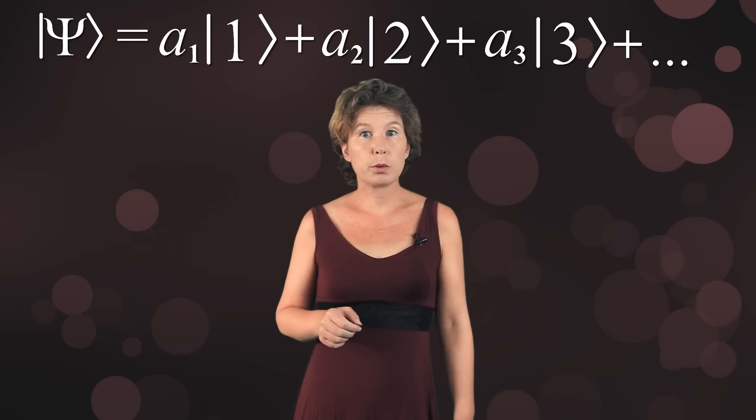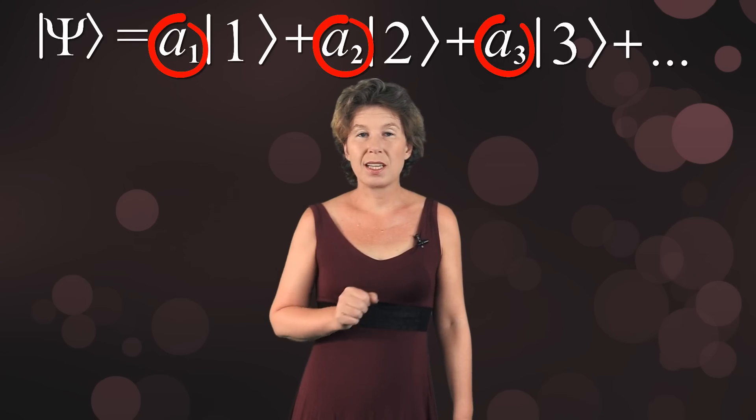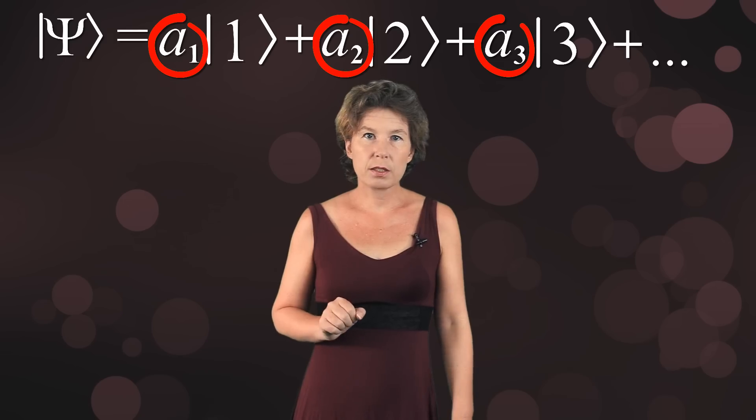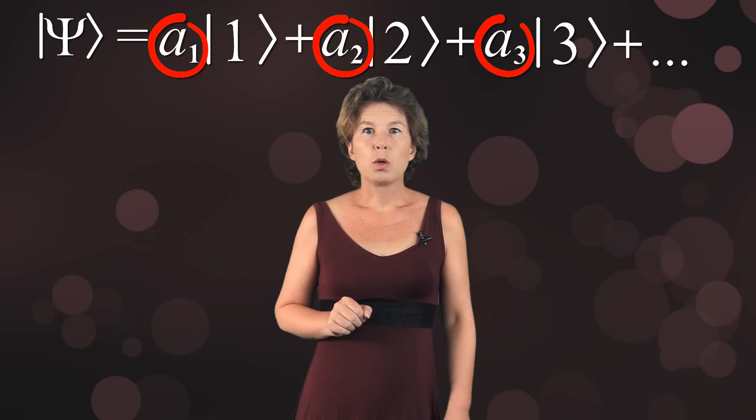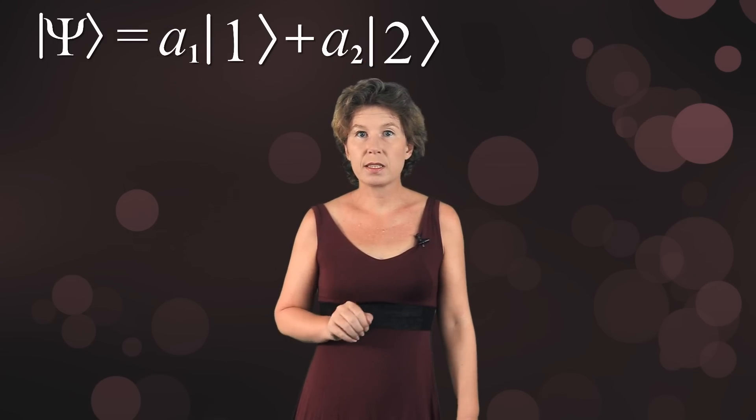A key feature of quantum mechanics is that the coefficients in the expansion of the wavefunction, for which I use the letter a, can be complex numbers. Technically, there can be infinitely many basis vectors, but that's a complication we will not have to deal with here. We will just look at the simplest possible case, that of two basis vectors.